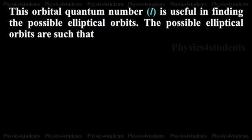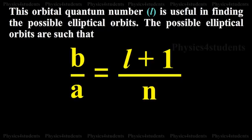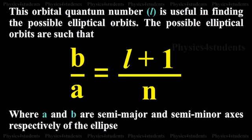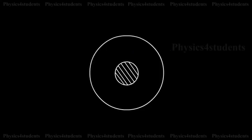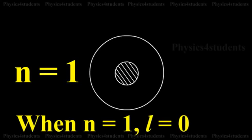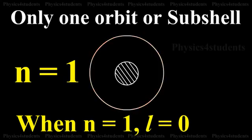The formula used is b/a = (l+1)/n, where b corresponds to the l value and a corresponds to the n value. For the first energy level, n = 1 and l = 0. Substituting into the formula, a is related to n and b is related to l.